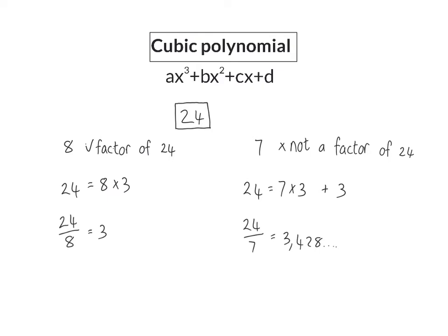A factor is then a value that the dividend can be divided by perfectly without a remainder.